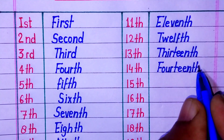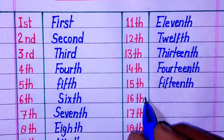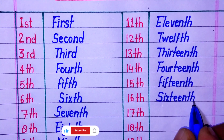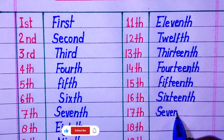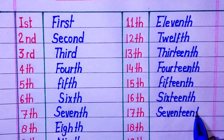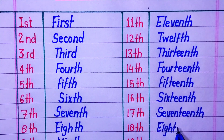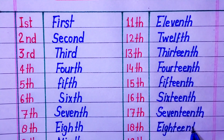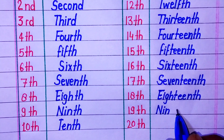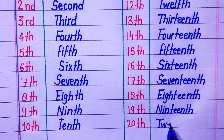Fourteenth — F I F T E E N T H. Fifteenth — 15th. Sixteenth — S I X T E E N T H. Seventeenth — S E V E N T E E N T H. Eighteenth — 18th. Nineteenth — N I N E T E E N T H. Nineteenth — 19th. Twentieth — 20th.